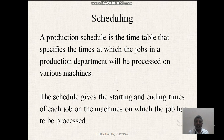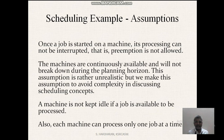Scheduling: a production schedule is the timetable that specifies the times at which the jobs in a production department will be processed on various machines. The schedule gives the starting and ending times of each job on the machines on which the jobs have to be processed.